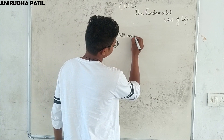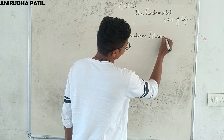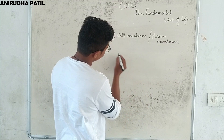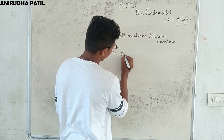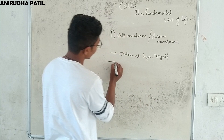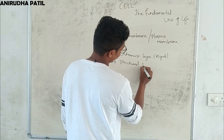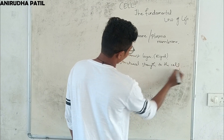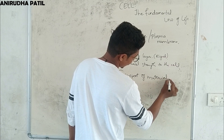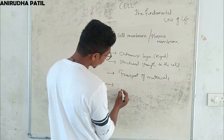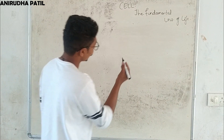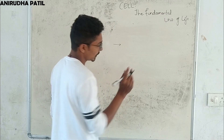The first organelle is the cell membrane, also called the plasma membrane. It is the outermost layer of the cell. It is a rigid layer that gives structural strength to the cell, helps in the transport of materials in and out of the cell, and separates the cell from the external environment.